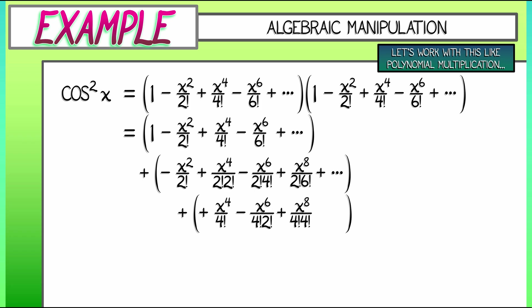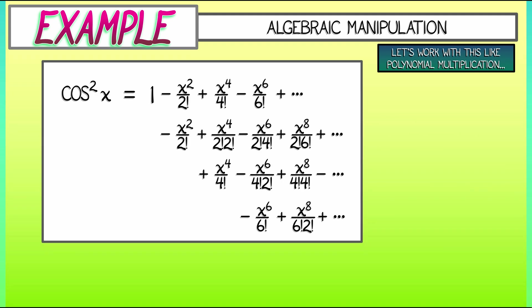Keep going. I have to do the same thing with x to the fourth over 4 factorial times all the terms in the cosine series. It really helps if you arrange these vertically so that the powers match up. Why?